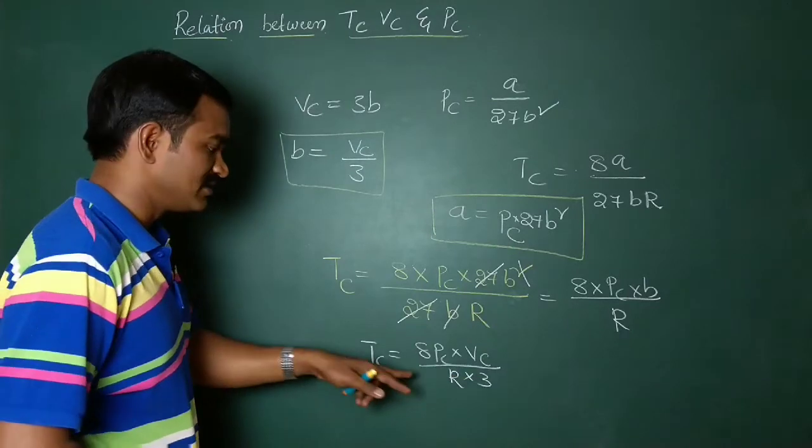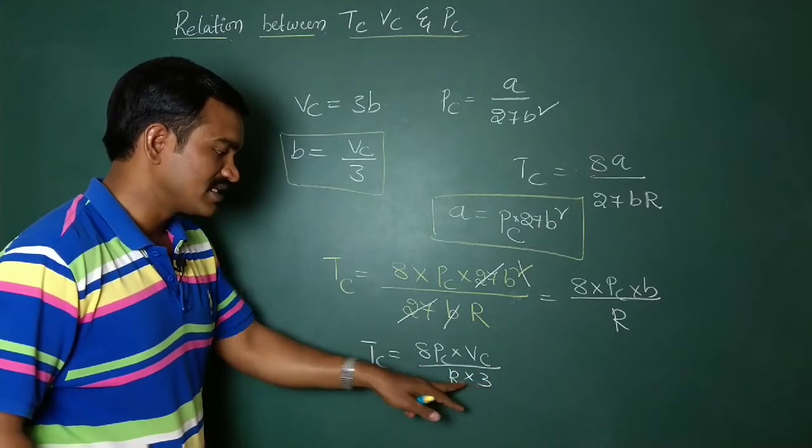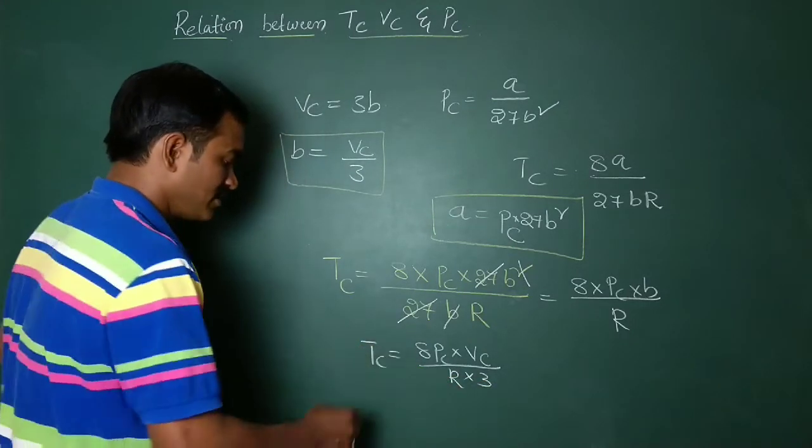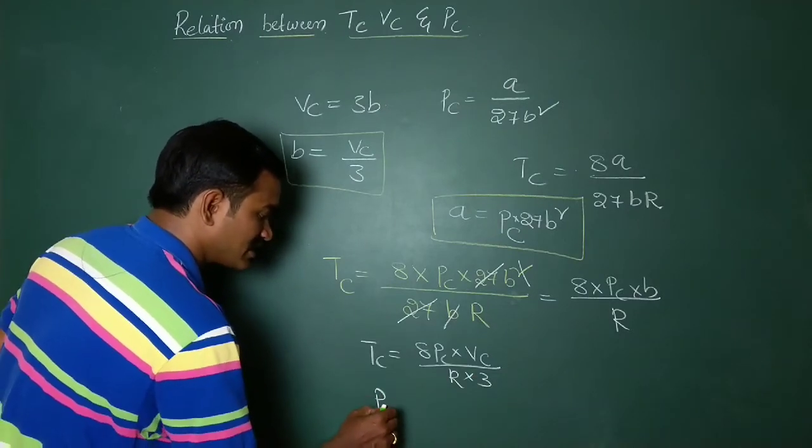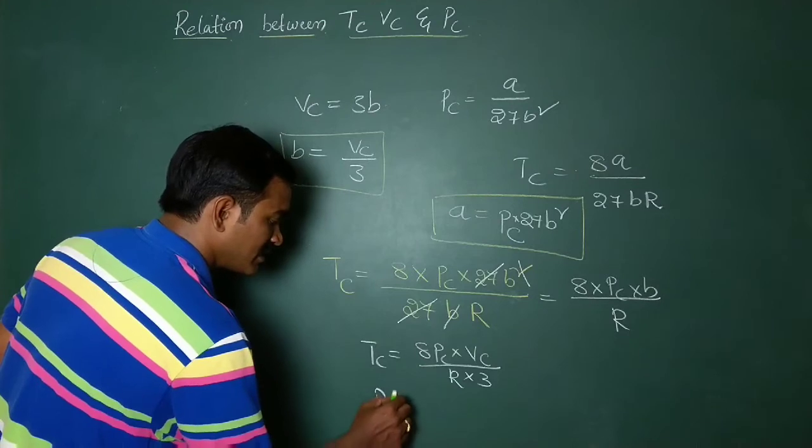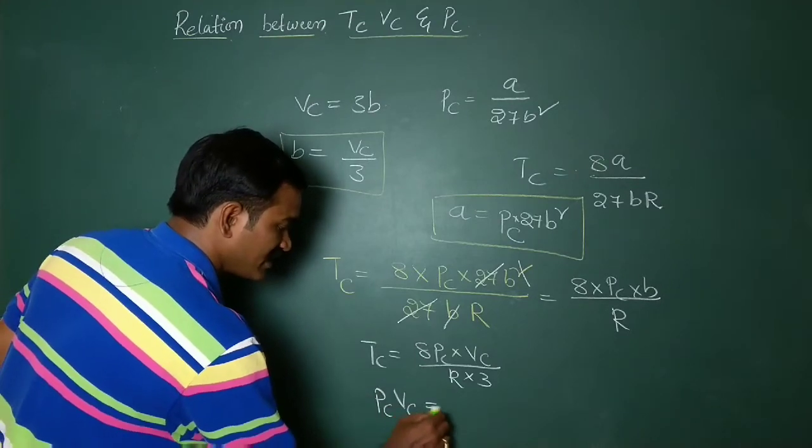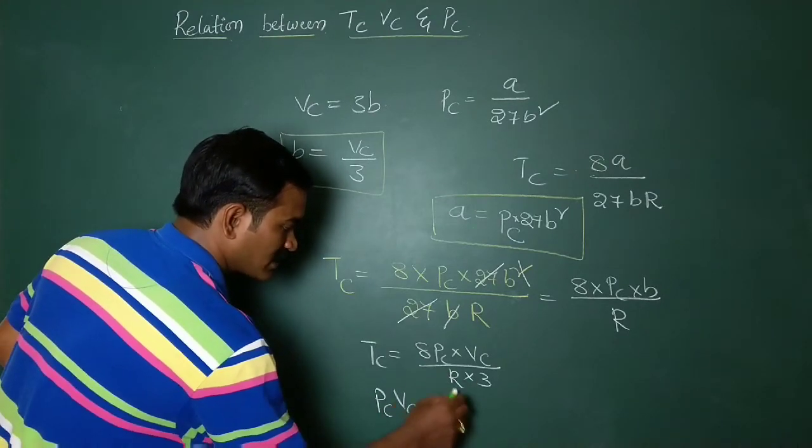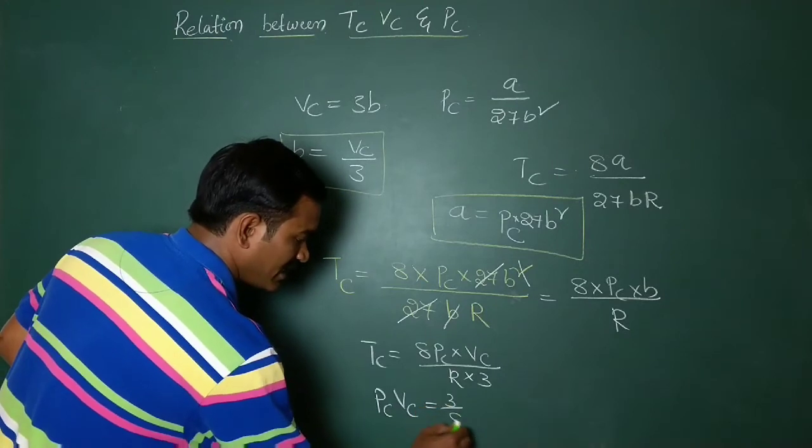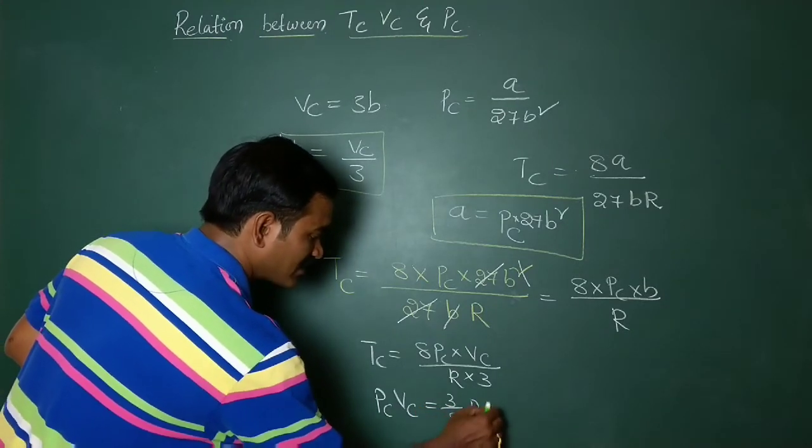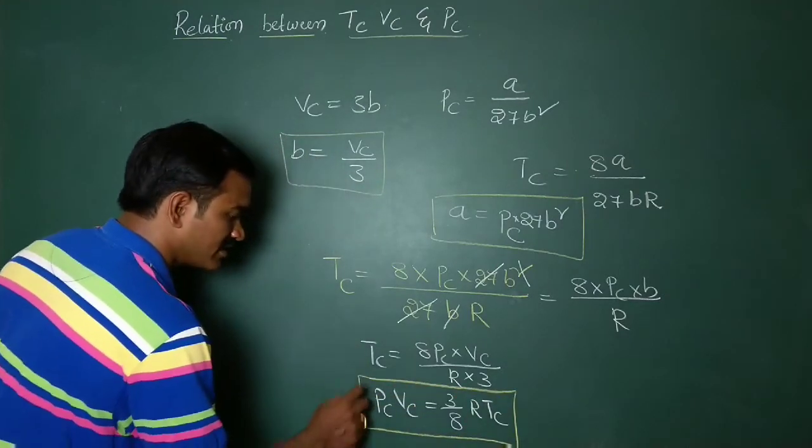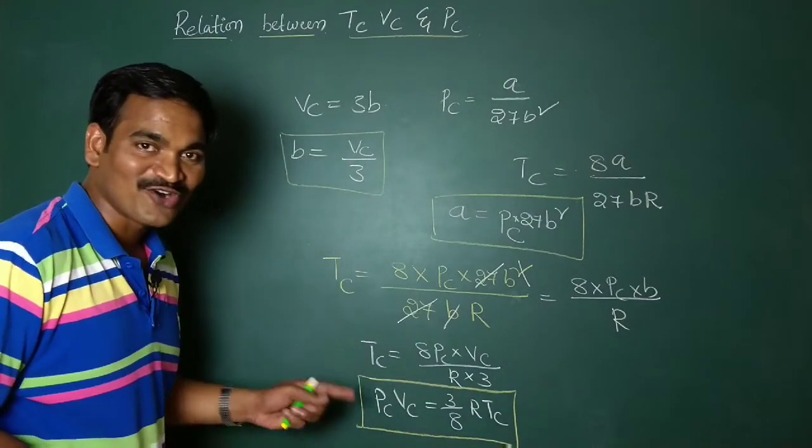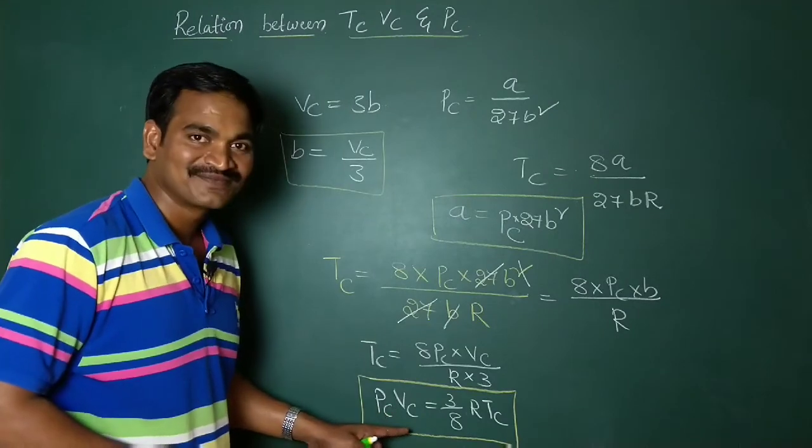So therefore, finally, relation is PcVc equals what? 3 by 8 RTc. This is the relation between critical constants. Have you got it? Right? Thanks for watching.